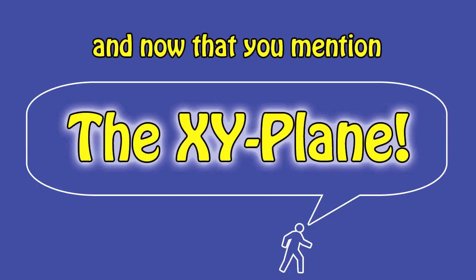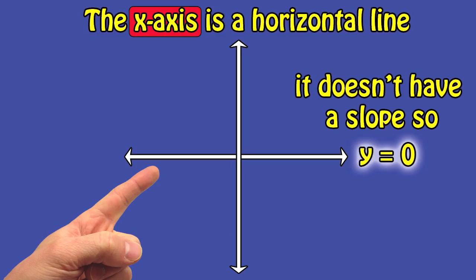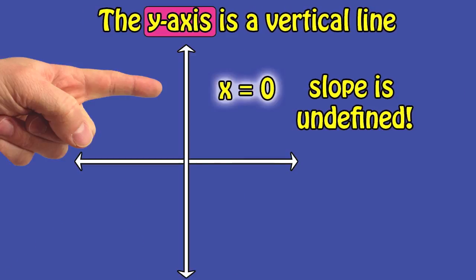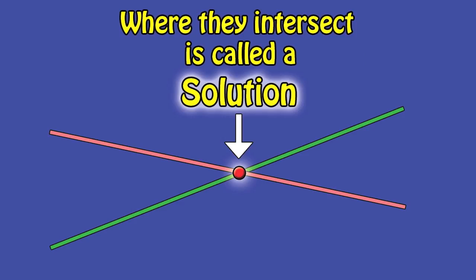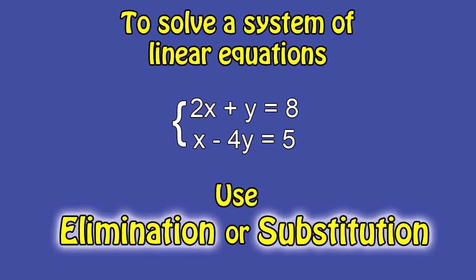Now that you mention the XY plane — the X axis is a horizontal line. It doesn't have a defined slope. The Y axis is a vertical line; the X equals zero slope is undefined. The lines with different slopes only cross one time. Where they intersect is called the solution to a system.